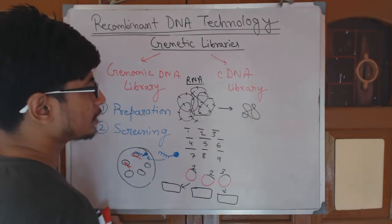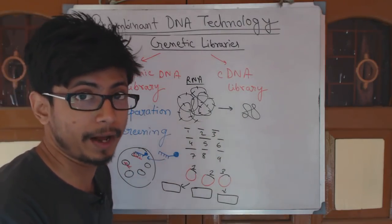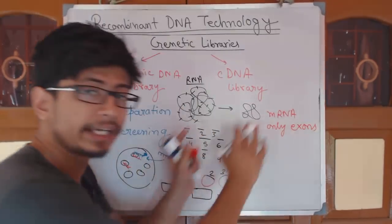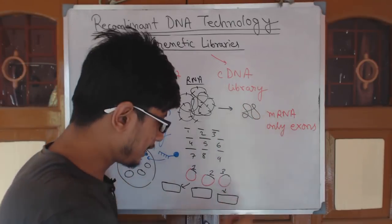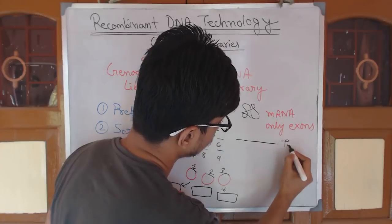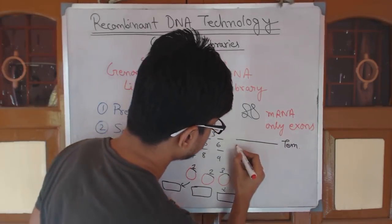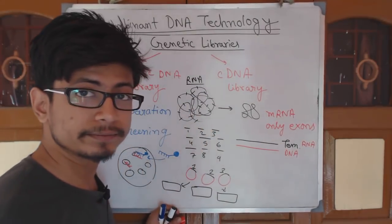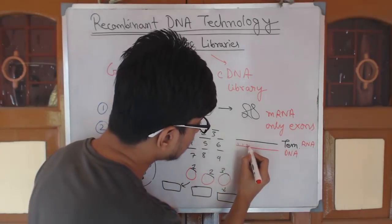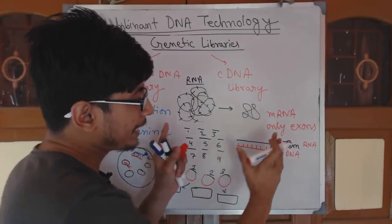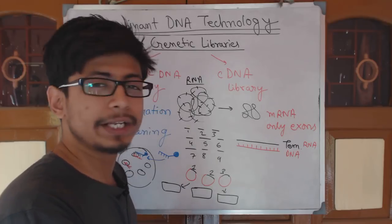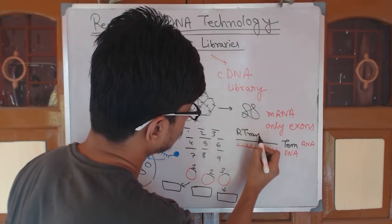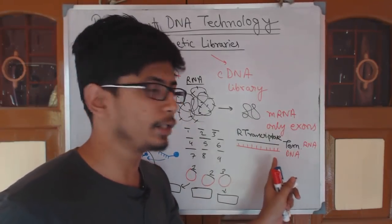How to produce DNA which replicates the structure of mRNA — that means, the feature of only exons? There is a way to do that, and the way is to produce DNA from that mature mRNA. So we take this mature mRNA with only exons present as a template and produce a DNA strand. We can produce DNA from mRNA as a template, and for this production to happen we need a specific enzyme called reverse transcriptase. We use reverse transcriptase enzyme to produce single-stranded DNA using mRNA as a template.